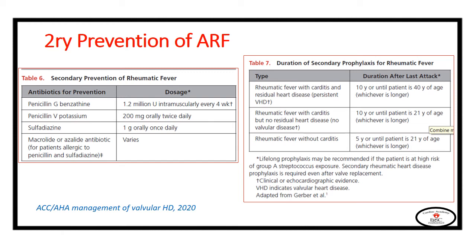The duration of secondary prophylaxis depends on the rheumatic lesions and residual lesions. Patients with rheumatic fever with carditis and residual heart disease should receive prophylaxis until 10 years after the first attack or until age 40, whichever is longer. Those with rheumatic fever and carditis but without residual valvular lesions should receive prophylaxis for 10 years or until age 21, whichever is longer. Those with rheumatic fever without carditis should receive antibiotic prophylaxis for five years or until age 21, whichever is longer.